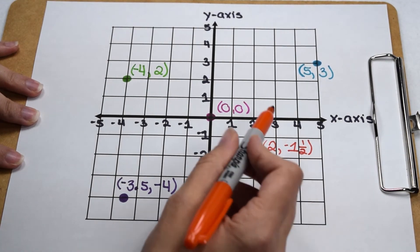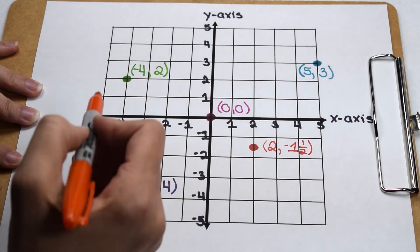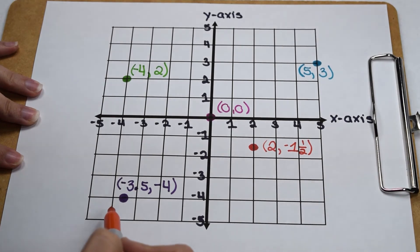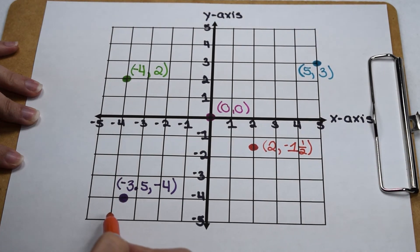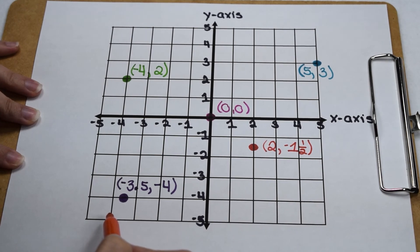So when working with four quadrants, we not only have to pay attention to how far we go on our x- and y-axis, we also have to pay attention to what direction, so we can determine if our ordered pair needs positive or negative signs in it.